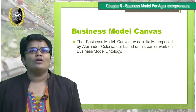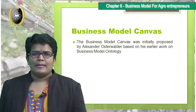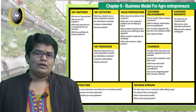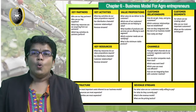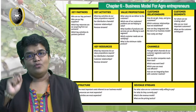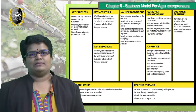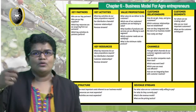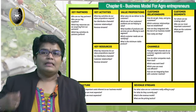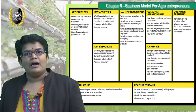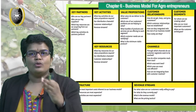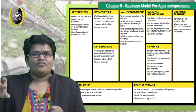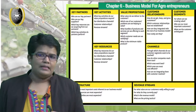The Business Model Canvas was initially proposed by Alexander Osterwalder based on his earlier work on business model ontology. In the Business Model Canvas there are nine elements. The first thing you need to know is who is your customer — not just who uses your product, but who is your paying customer, who is actually going to hand you the money. For example, pampers are used by babies, but the baby is not going to give you money — the father or mother is the one spending money on pampers. So identify who is your paying customer.